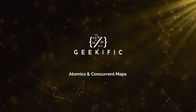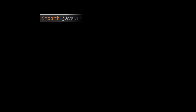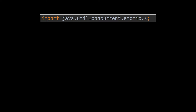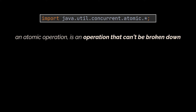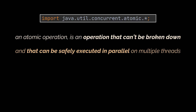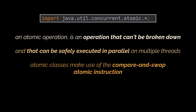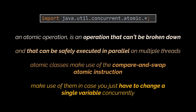The java.concurrent.atomic package contains many classes that allow us to perform atomic operations. An atomic operation is one that can't be broken down and can be safely executed in parallel on multiple threads without using the synchronized keyword or locks. Internally, atomic classes make use of the compare-and-swap atomic instruction, which is usually much faster than synchronizing via locks.